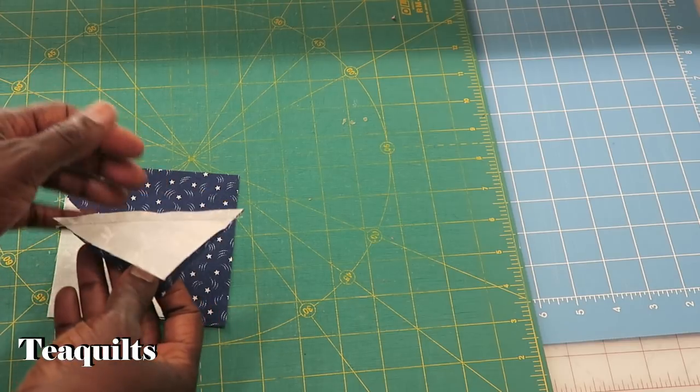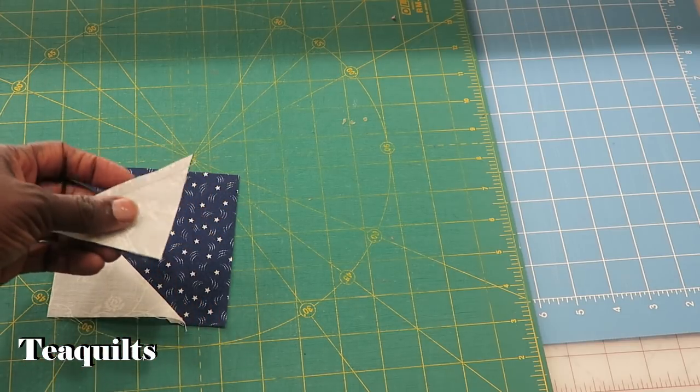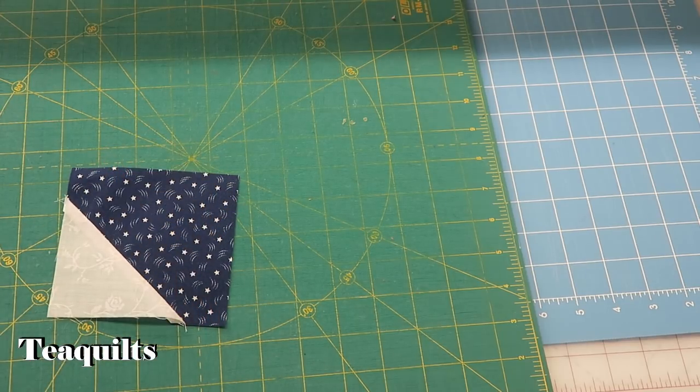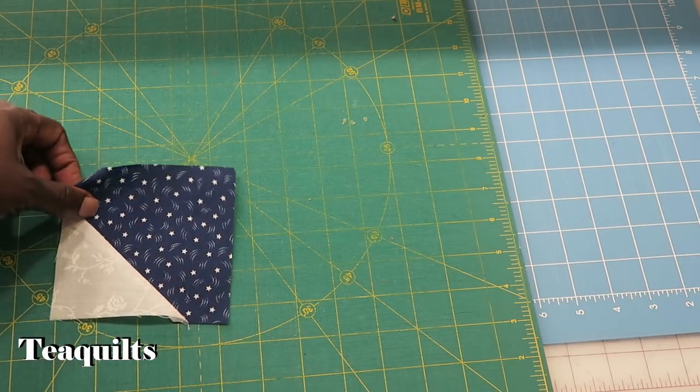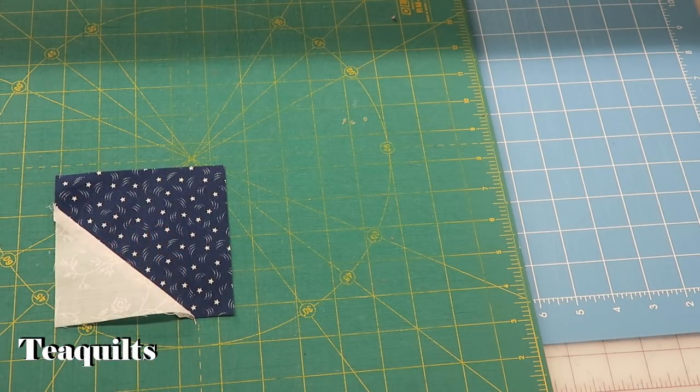That is two and three-fourths, but you can also square these up to two and a half if you like. So once we do this step, we want to take our next square.